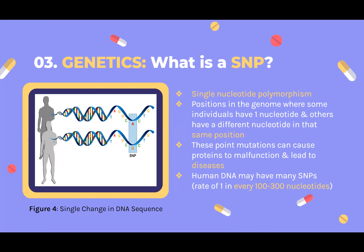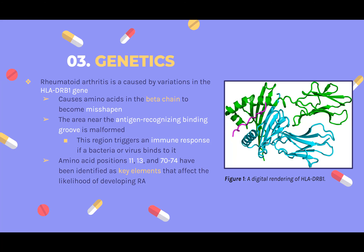Now we get to the central premise of this presentation. SNPs, or single nucleotide polymorphisms, are instances of nucleotides at certain positions in the genome being different than they would normally be in a healthy individual. These can lead to proteins malfunctioning and for diseases to occur. There are normally many SNPs that occur at a rate of about 1 in every 100 to 300 nucleotides, but there are mechanisms in place during DNA replication to fix the errors when they do happen. Rheumatoid arthritis is a single nucleotide polymorphism disease on the HLA-DRB1 gene, but it should quickly be noted that this disease is not heritable. These mutations can cause some amino acids to change shape, specifically the area near the antigen recognizing binding groove. This region is critical because it triggers an immune response when a bacteria or virus binds to it. It is suspected that these changes can allow normal peptides produced by the body to bind to the gene, thus triggering the immune response, but research is still not clear on that.